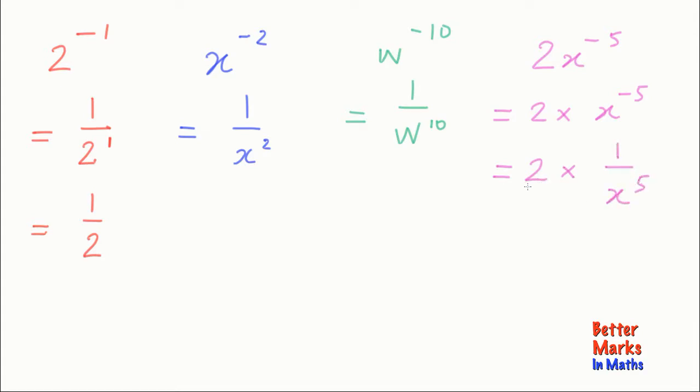2 is really 2 over 1, and then multiplying fractions, top numbers together, 2 times 1 equals 2, and on the bottom 1 times anything is just that anything. So we end up with 2 over x to the 5.